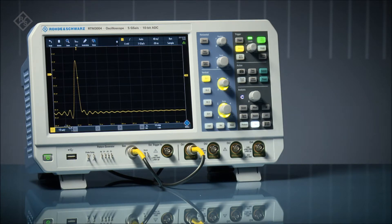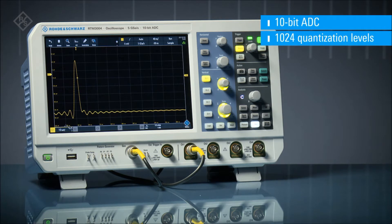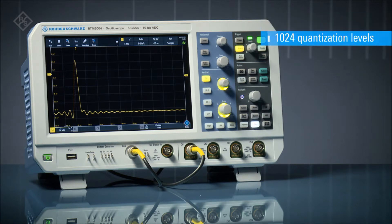Rohde & Schwarz RTM 3000 series oscilloscopes feature 10-bit ADCs for increased vertical resolution. 10-bit ADCs have four times more vertical resolution than 8-bit ADCs.